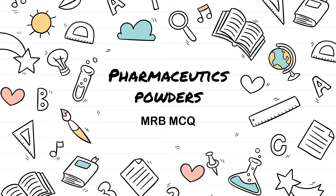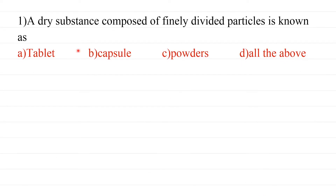First question: A dry substance composed of finely divided particles is known as — options are Tablet, Capsule, Powders, or All of the above. A tablet is a compressed single dosage form. Capsule is different as well. Powders are finely divided particles, so the answer is C — Powders is the definition.